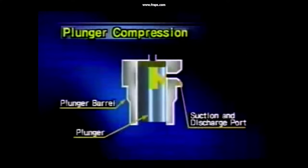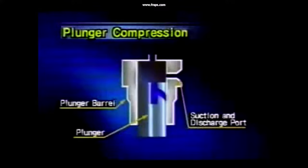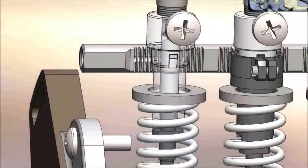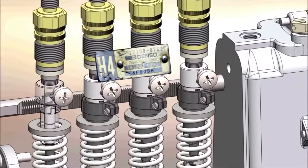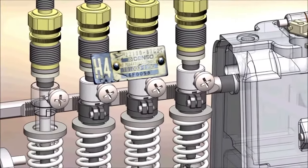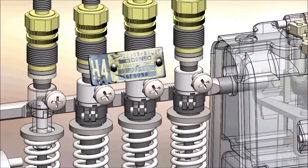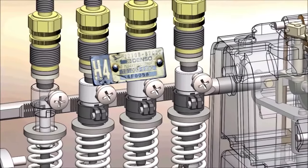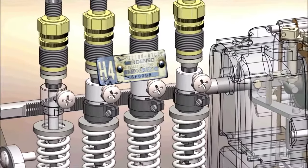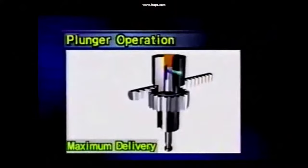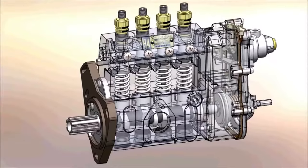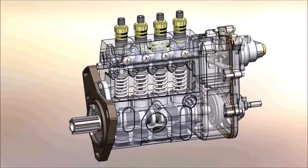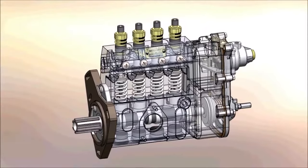Here we have our fuel rack metering our fuel. Basically it's rotating our plungers which is changing the position of our helix, changing our effective stroke. Our effective stroke determines the amount of fuel being metered, so it could be either a long effective stroke or short effective stroke.